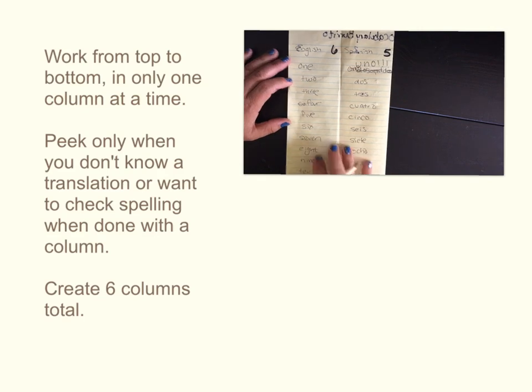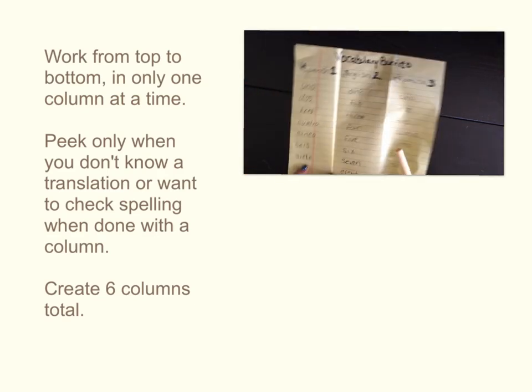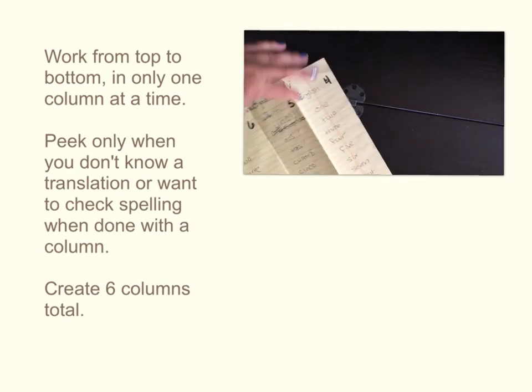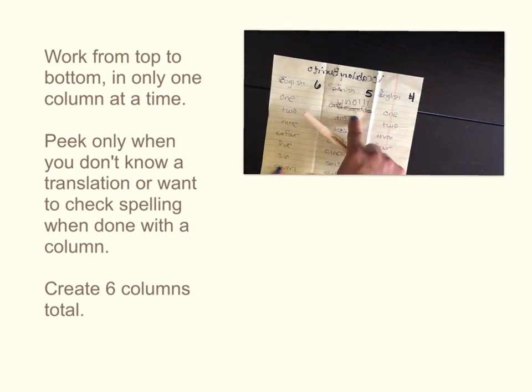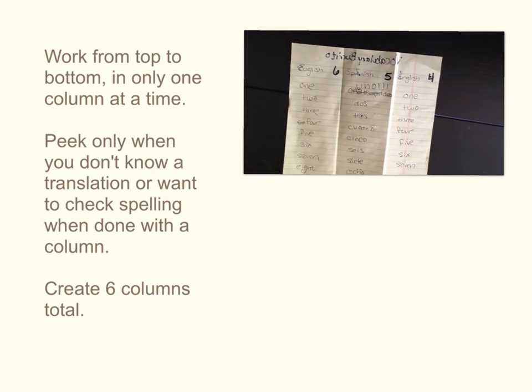You can do all six columns in one setting or create the first two. When you're done you'll have all six columns: English three and Spanish in three. So you can do it all in one setting or you can do it in parts. A few one day and then a few another day to double check yourself again.